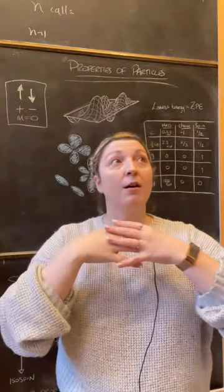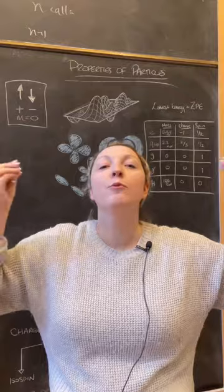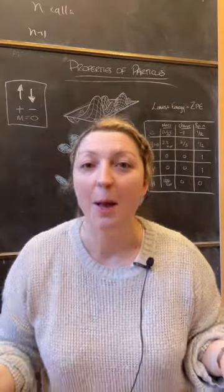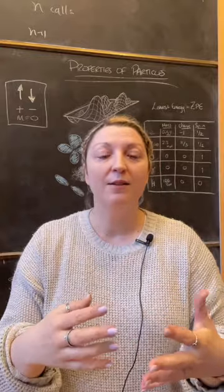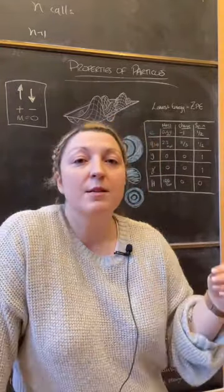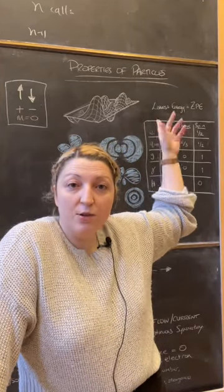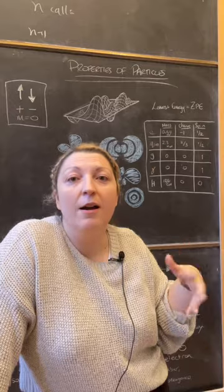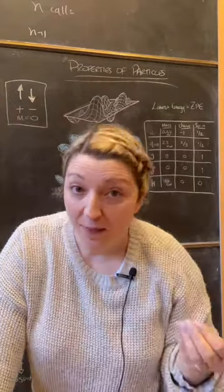Quantum fields are everywhere, all throughout space and time, at every corner of our universe. But they fluctuate. So the energy value of the field is not the same everywhere. In quantum mechanics, systems like to be in their lowest energy state. So generally, that's where quantum fields are. It's zero point energy. Yes, that's what that means.